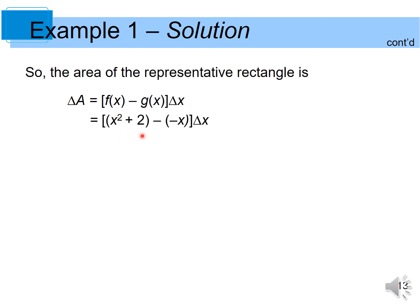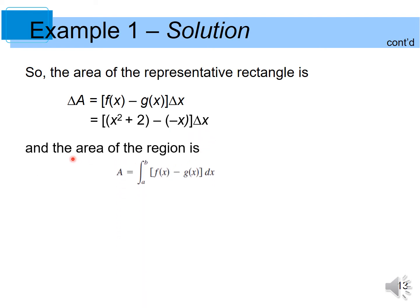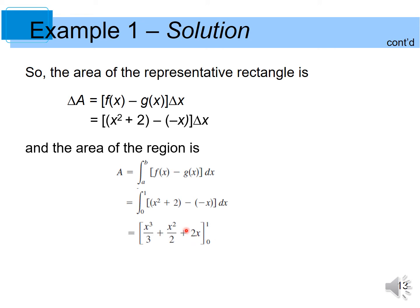So now we have (x squared + 2) minus (negative x) times delta x. The area of the region is given by integrating this expression from 0 to 1. We simplify the integrand, apply the power rule to integrate, and simplify the answer. The area of this region is 17 over 6.